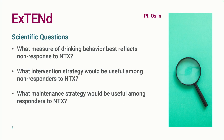EXTEND has three scientific questions. The first is about the tailoring variable: what measures of drinking behavior best reflect non-response to naltrexone? The second research question is about non-responders: what's the best intervention strategy for those folks? And the third research question is about individuals for whom naltrexone is working: what's the best way to continue offering support to them?